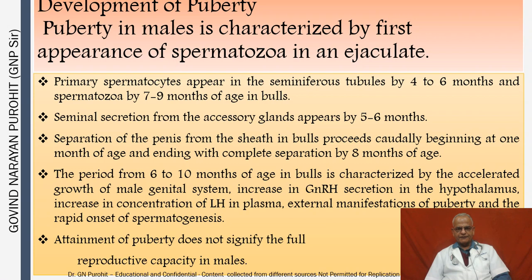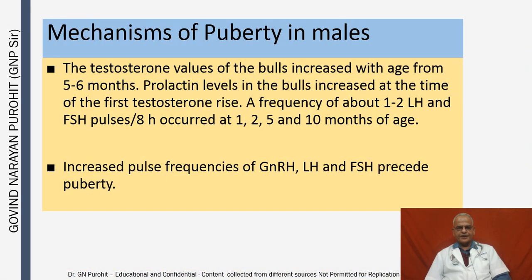The period from six to ten months of age in bulls is characterized by accelerated growth of the male genital system, increase in GnRH secretion in the hypothalamus, increase in concentration of LH in the plasma, external manifestations of puberty, and the rapid onset of spermatogenesis. Attainment of puberty does not signify full reproductive capacity in males, which is attained at a later age and is known as sexual maturity.